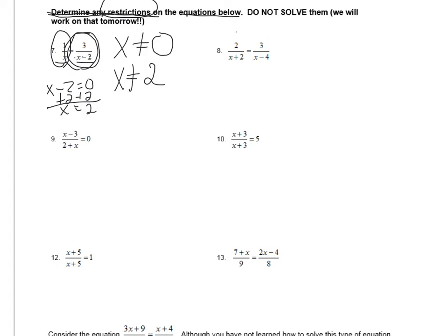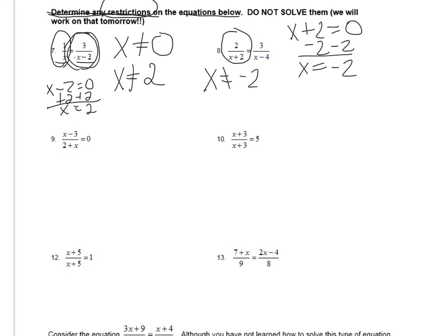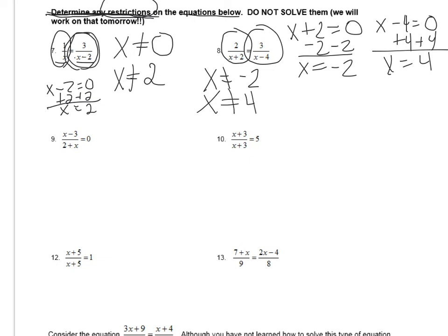In the next problem, the first denominator is x plus 2. Set that equal to 0; subtracting 2 from both sides gives x equals negative 2. So our first restriction is x cannot be equal to negative 2. In the second fraction we have 3 over x minus 4. Take that denominator, set it equal to 0; adding 4 to both sides gives x equals 4. So x equals 4 makes the fraction undefined, and since we're asked to determine any restrictions, we write: x cannot be 4.